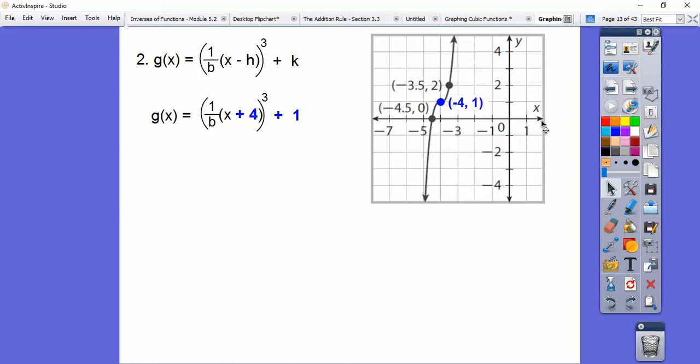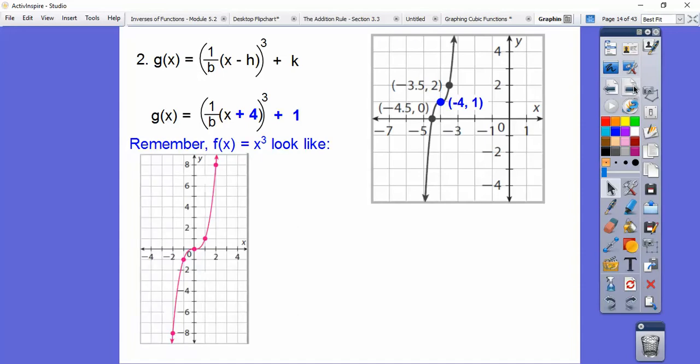If it went over 2, it would go up 8. Well, this graph is going over a half up 1. So b is a half, so it's the reciprocal. This number is always the reciprocal of how much we went over. How come? Well, that's in module 5-1. But for now, it's just the reciprocal. So the reciprocal of a half is 2. So that number is 2.